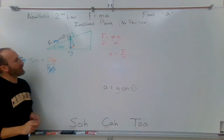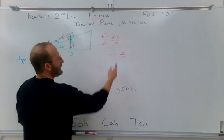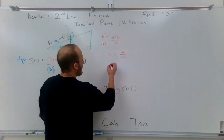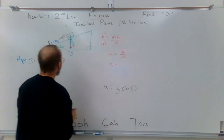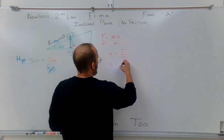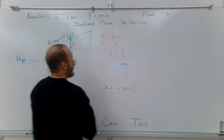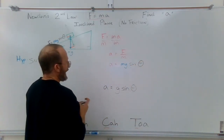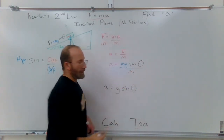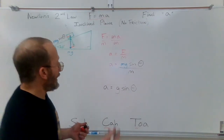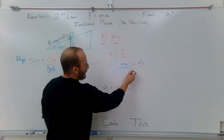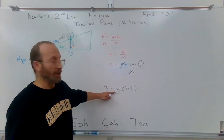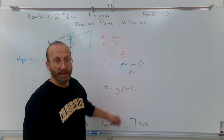Now we know this force. To get the acceleration, we need F divided by M, and now we know F equals mg times the sine of theta. So the acceleration A equals mg times sine of theta, all divided by mass M. The mass cancels on numerator and denominator, leaving us with: acceleration equals g times the sine of theta — or 9.8 meters per second squared, or 10, times whatever the sine of theta is.